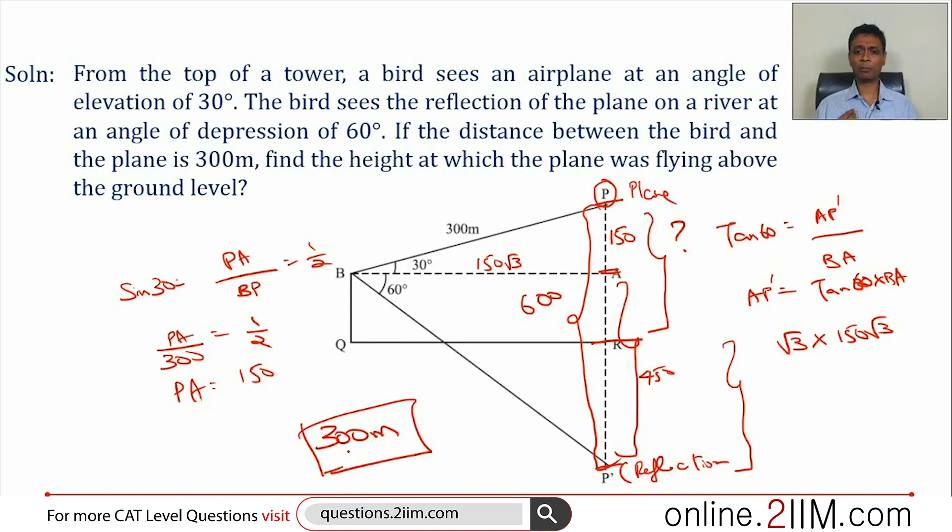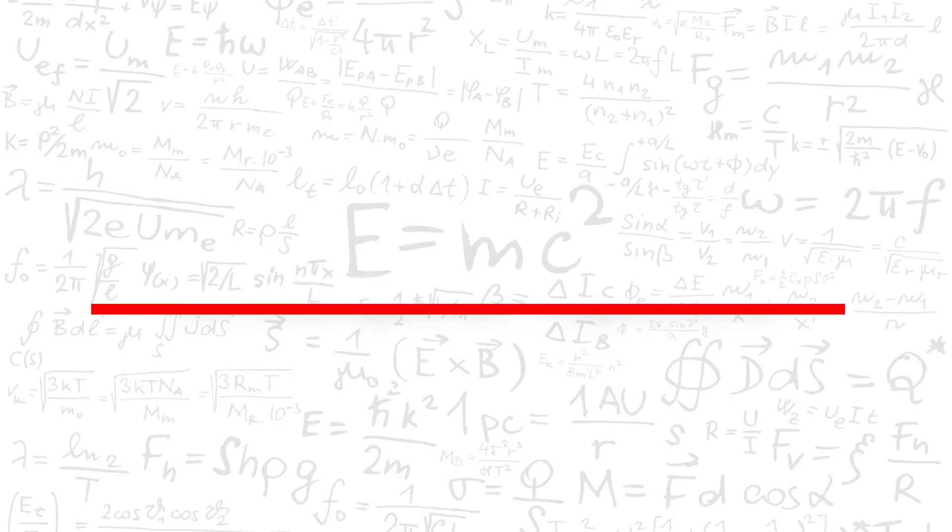Plain and simple mirror reflection or river reflection. We all know that. All we need to do is put it into context and you're through. So the height at which the plane was flying above the ground level is 300 meters.